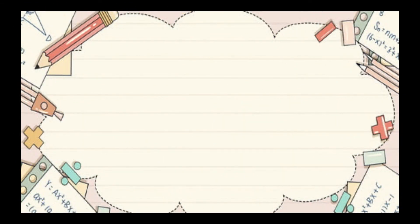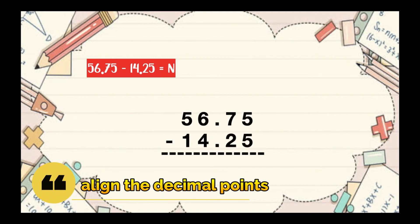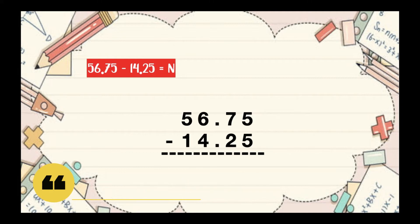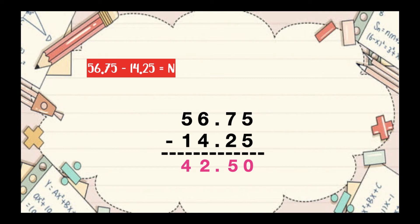Let's have another example. How about if I have 56.75 minus 14.25 equals n? The first thing that we need to do is to align the decimal points just like this. We're going to start subtracting from the rightmost digit. 5 minus 5 is 0. 7 minus 2 is 5. Copy the decimal point. 6 minus 4 is 2. 5 minus 1 is 4. So the answer is 42.50, or we can just write 42.5.